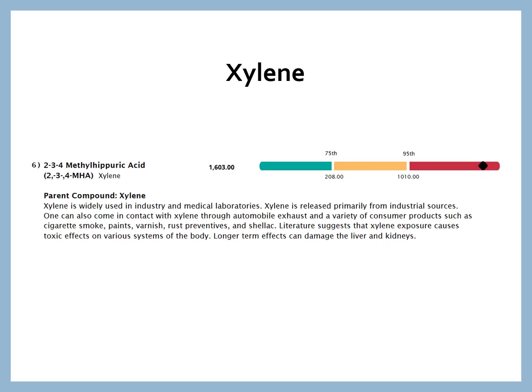As an example, xylene, which was elevated on this particular test, is widely used in industry and medical laboratories. It's released primarily from industrial sources, so people can get it through contaminated water. But it can also come from automobile exhaust, cigarette smoke, paints, varnishes, and rust preventatives. Long-term exposure to xylene can be problematic for both the kidneys and the liver.